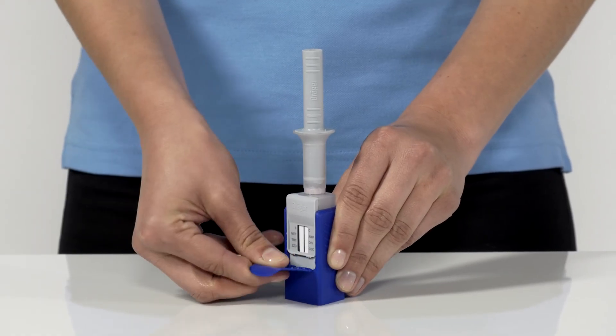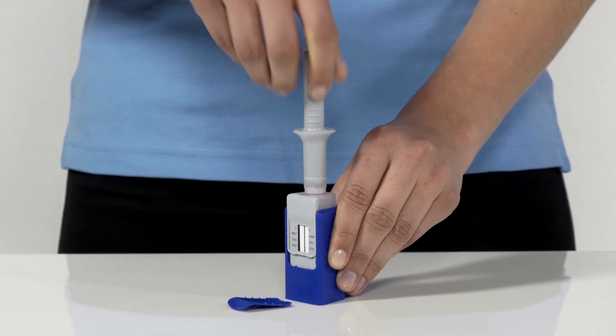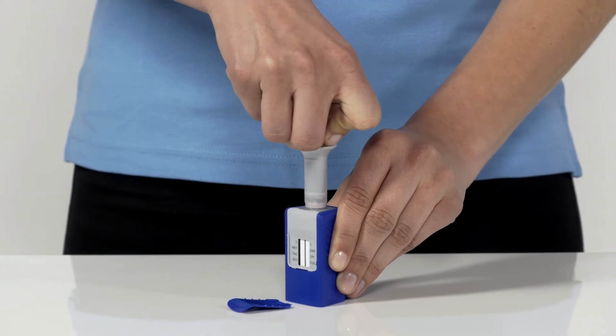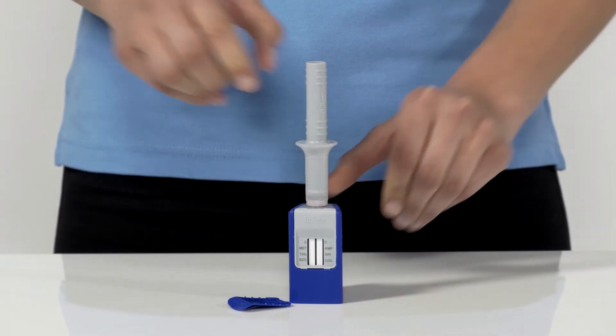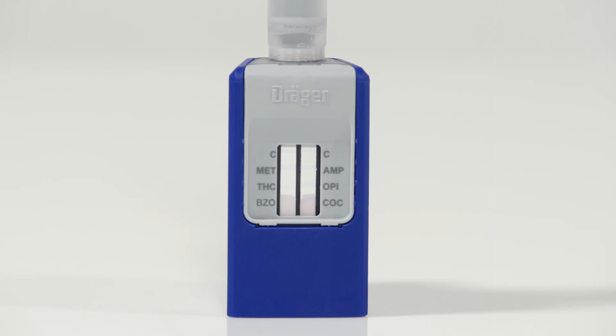After the wait time has passed, pull down the security tab to completely detach it. Then push the sampler straight down into the test kit up to the stop. The test has now begun. The control and test lines appear after around 2-3 minutes. You can then read off the results.